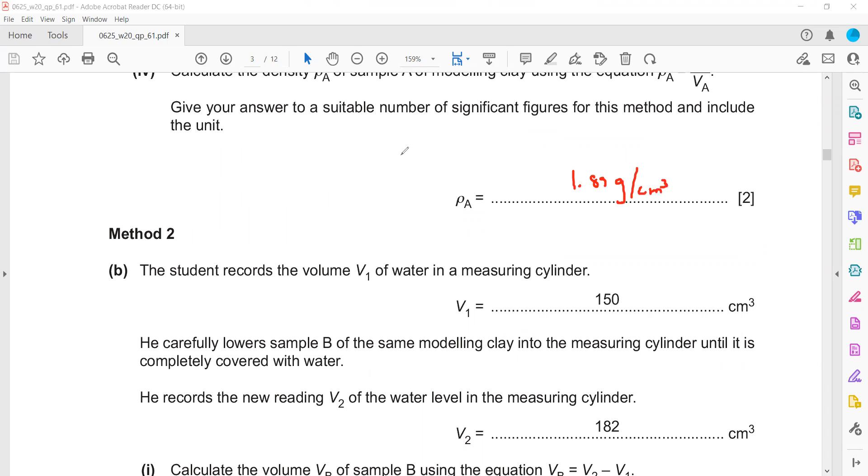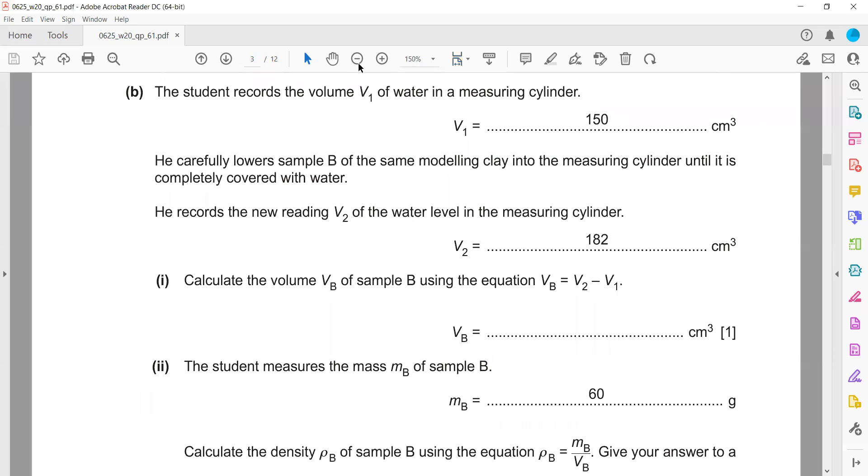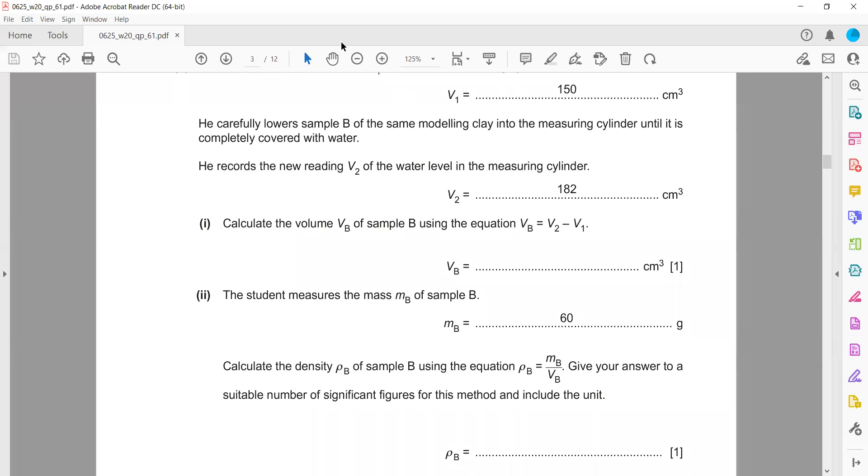In the second method, the student records the volume of water in a measuring cylinder using the displacement method. He filled the measuring cylinder with water, which was 150 cm³. Then he added the modeling clay, and the volume changed as the clay was added.